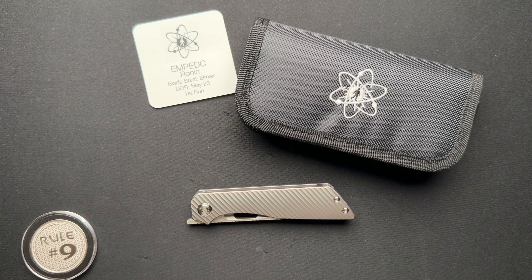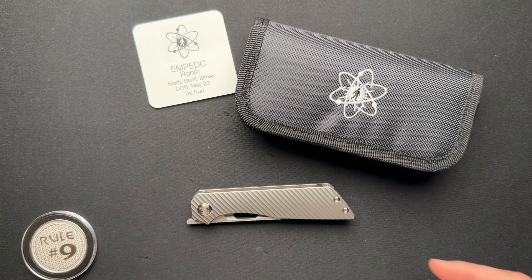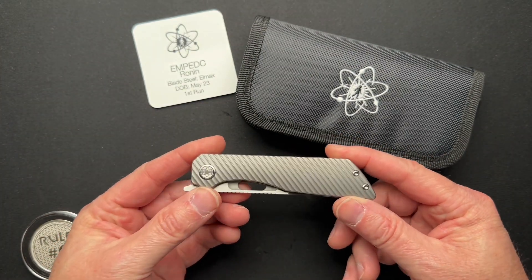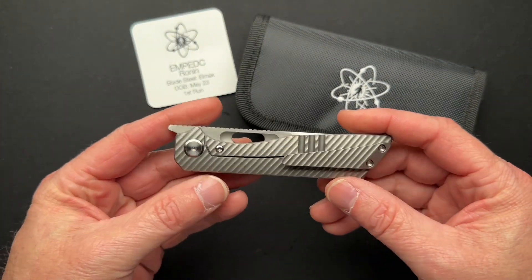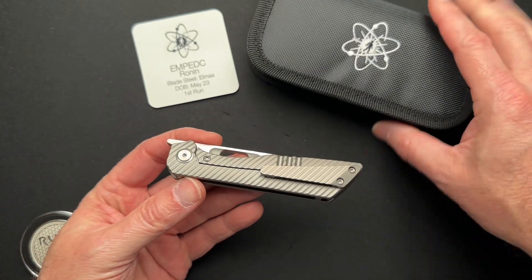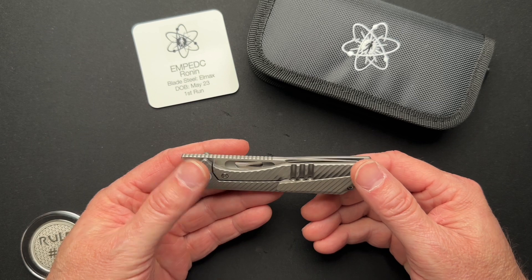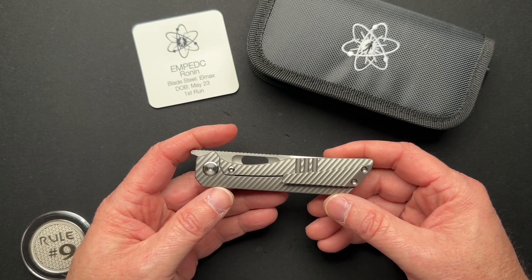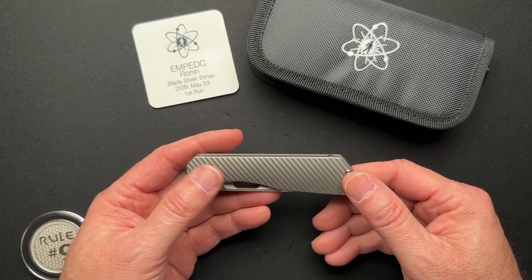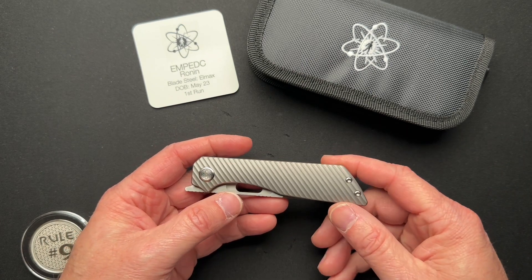July 1st, 2023, the EMP EDC Ronin is dropping. These will be available that Saturday at 10 a.m. Pacific, 1 p.m. Eastern. These run $325 and you can get them on the website that will be linked down below.